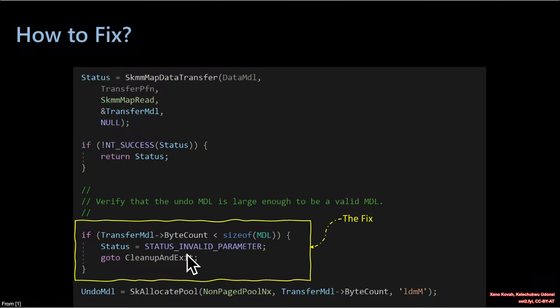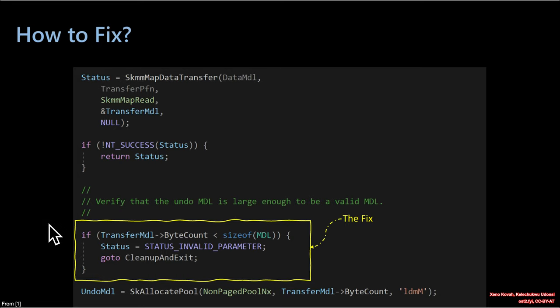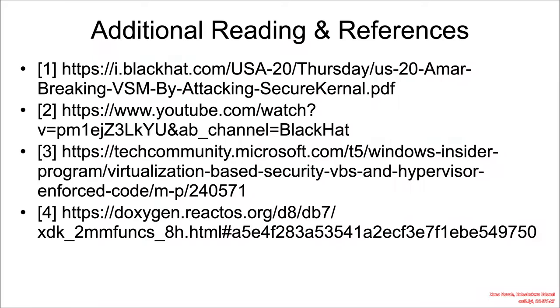So how would you fix that? It's relatively easy. You just need to make sure that the byte count is not less than the size of the MDL, and if it is, error out and return back. Easy peasy. The fix for this vulnerability is extremely easy, and as you'll see in the exploitation section, the exploitation is not very easy.